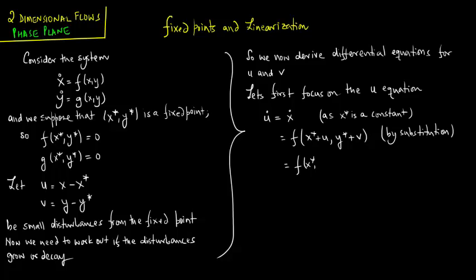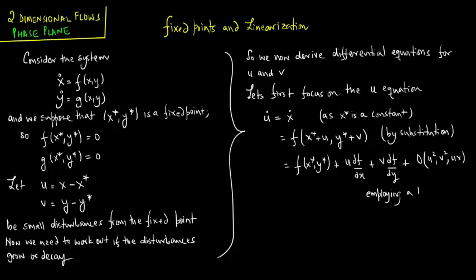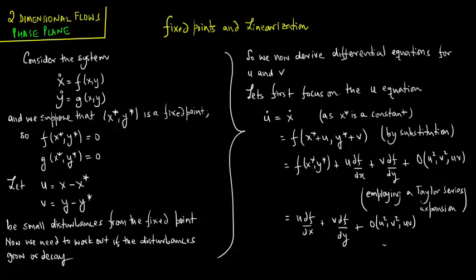This expands to f(x*, y*) plus u times df/dx plus v times df/dy, plus terms that are order u², v², and uv. Since f(x*, y*) = 0, these terms vanish.